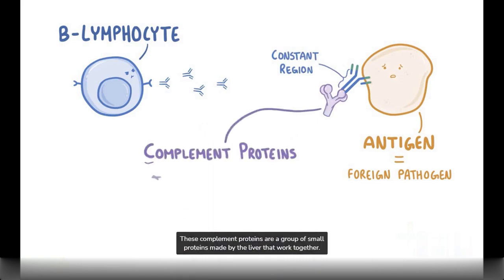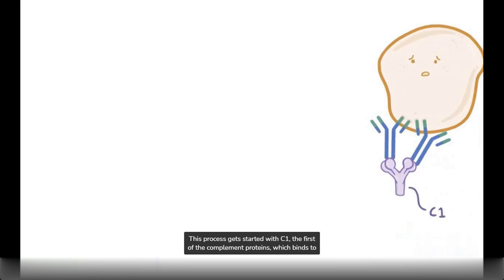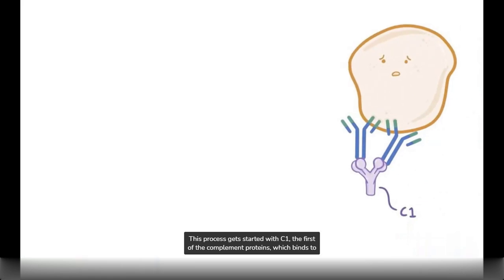These complement proteins are a group of small proteins made by the liver that work together. One complement protein cuts or cleaves the next one, which activates it and creates an enzymatic cascade. This process gets started with C1, the first of the complement proteins, which binds to the Fc or constant region of two antibodies attached to the pathogen.